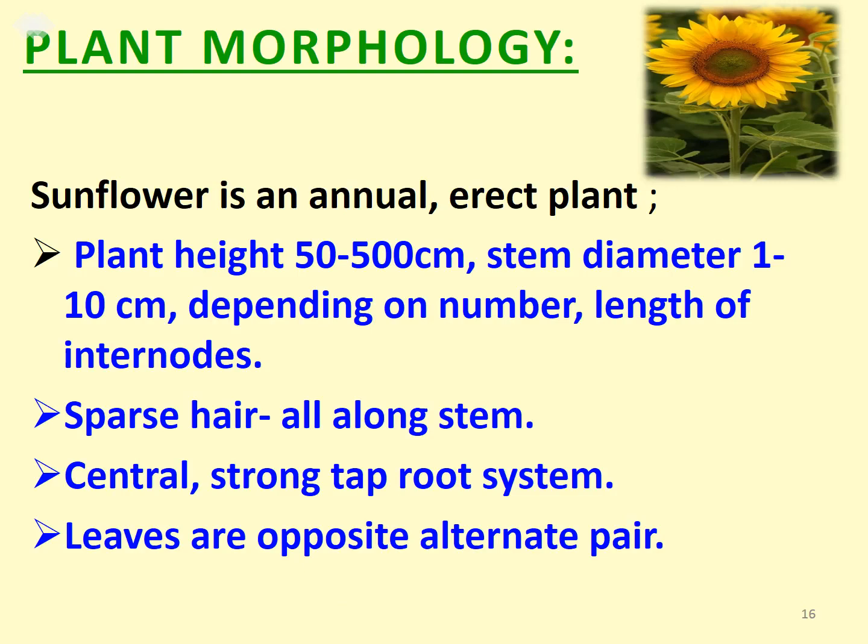Plant morphology of sunflower: it is an annual erect plant, though some are biennial or perennial. The plant height in annuals is 50 to 500 centimeters, stem diameter of 1 to 10 centimeters depending on the number and length of internodes. It has sparse hair all along the stem, a central strong taproot system, and leaves are opposite to alternate in arrangement.